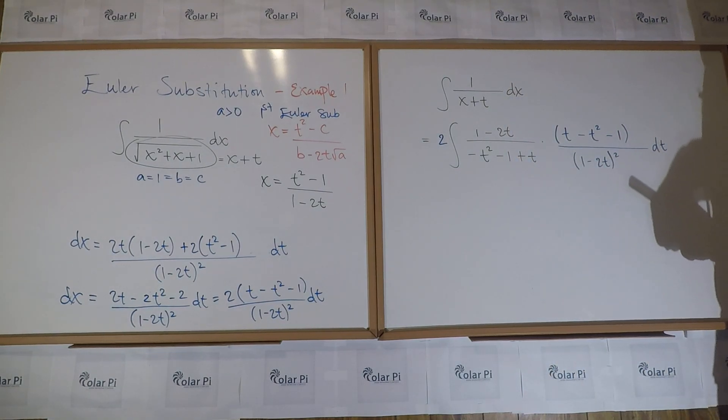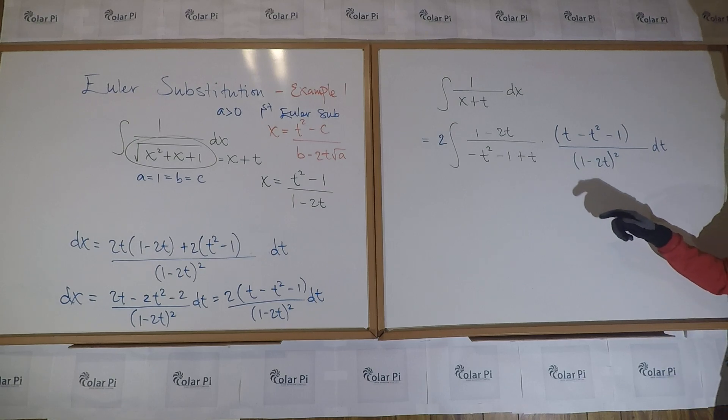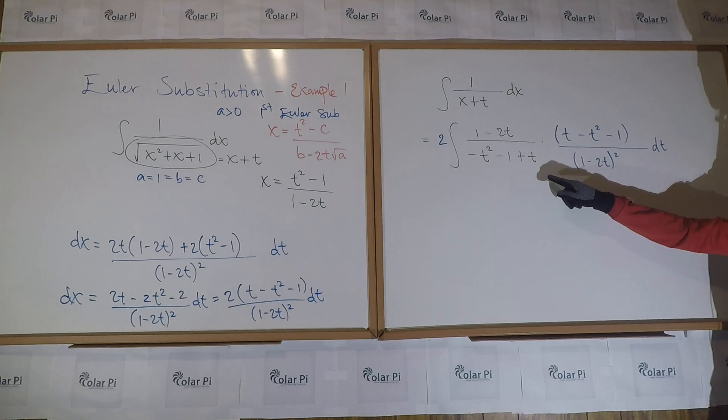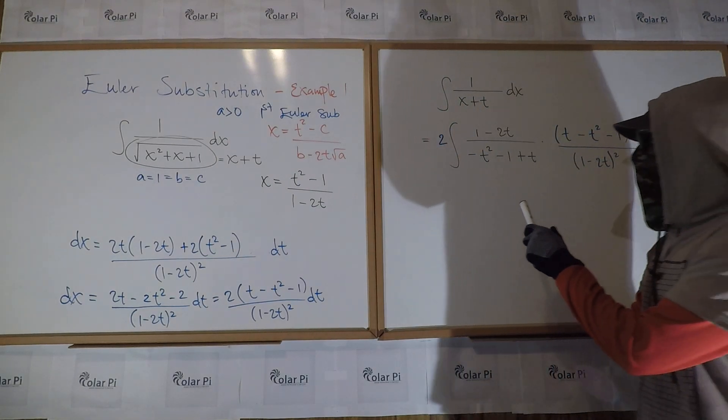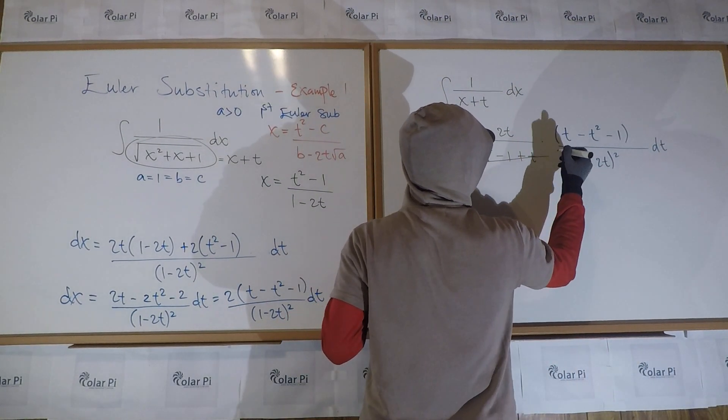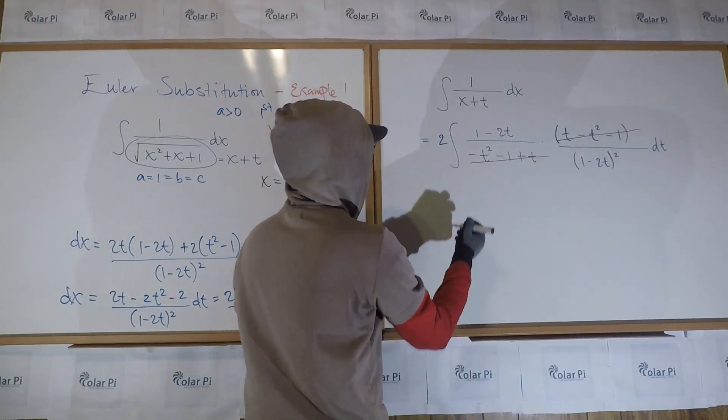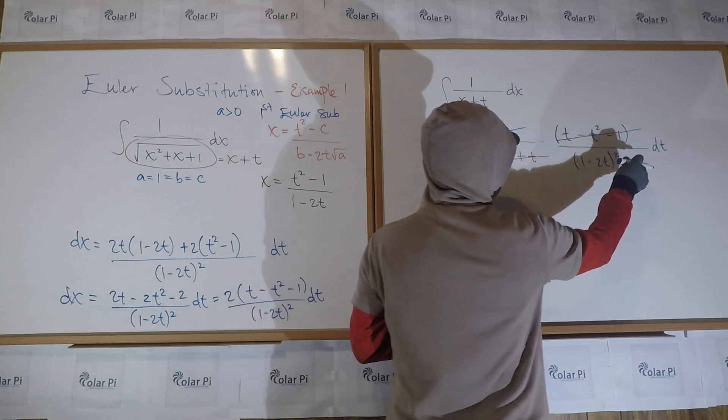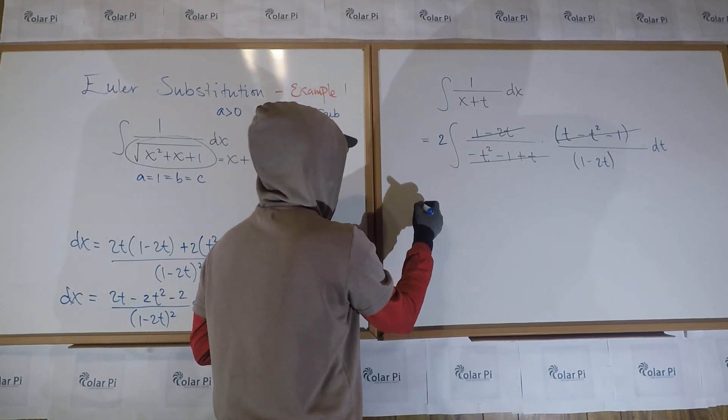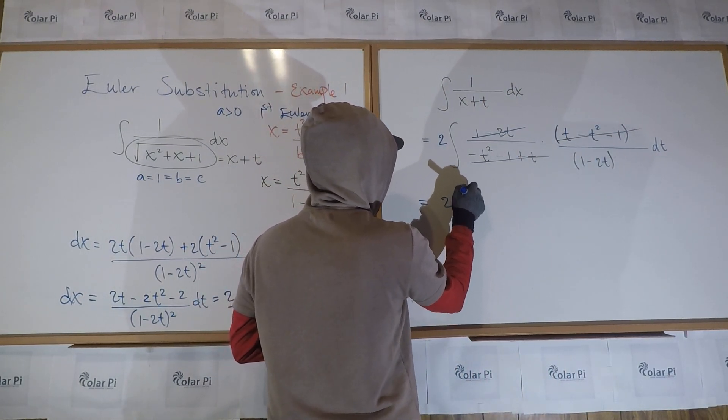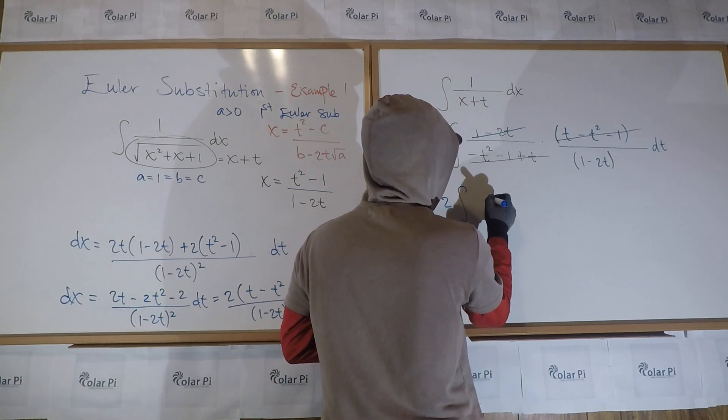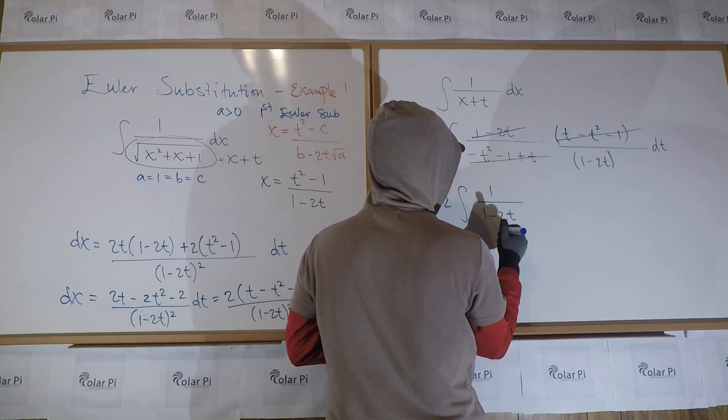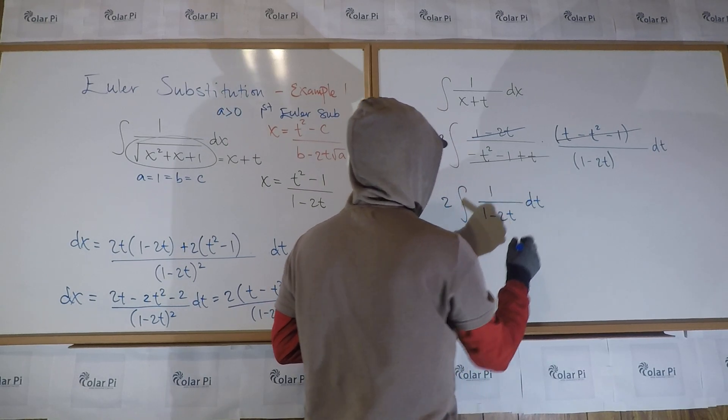Look here. Minus T squared, minus T squared, minus one, minus one, plus T. So these two guys are identical. So I could go boom, boom. And then one minus two T here can be crossed out and I could get rid of that. So you see what we have is the same as just two times the integral of one over one minus two T, DT.